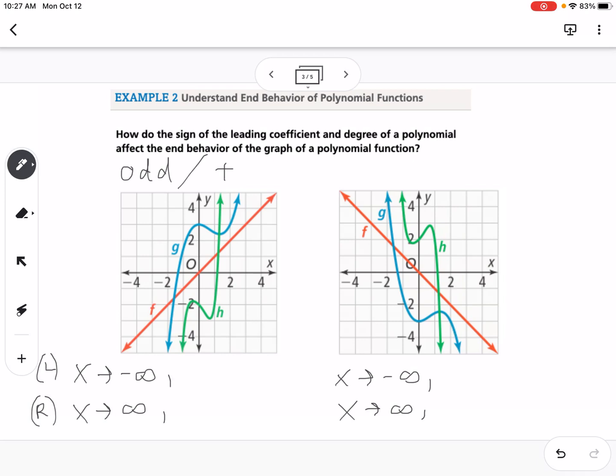So now we have to say what happens to the y as we move to the left. So if you look down here, or here, or here, as we move to the left, the graphs are going down. So we would say y goes to negative infinity. And then as we go to the right, that's talking about these arrows up here, they're going up to positive infinity. So as we go to the right, we're going to positive infinity.